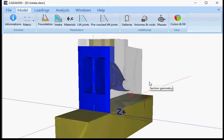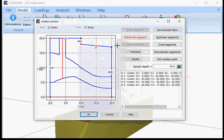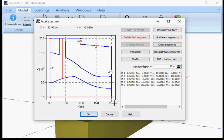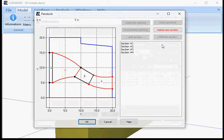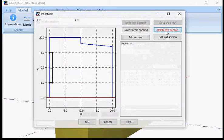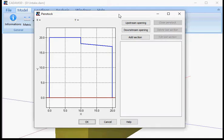To define that penstock, once you have defined your profile of your section and the section depth, you can go into penstock. From here I will delete the penstock. The only thing that will be available is upstream opening.